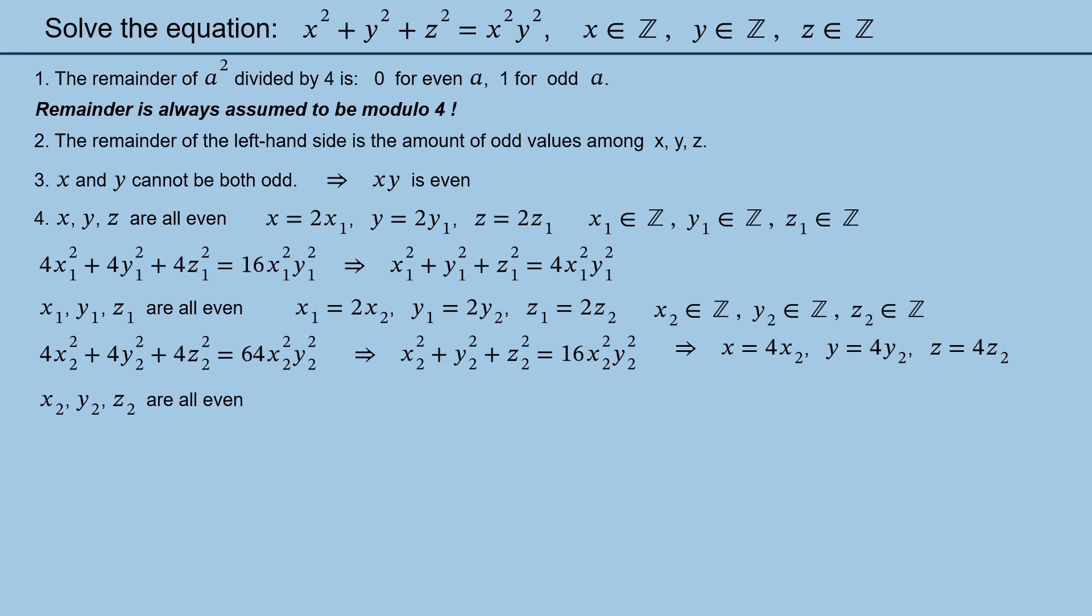Therefore, x₂ = 2x₃, y₂ = 2y₃, z₂ = 2z₃, where of course x₃, y₃, and z₃ are all integers. While for the original values x, y, and z we can write that x is 8x₃, y is 8y₃, and z is 8z₃. Guess what we do next? Precisely, we realize that the process can be repeated infinite number of times, while each iteration of the process increments the power of 2 in the factor for x, y, and z.